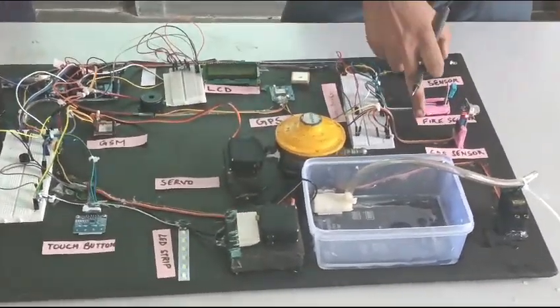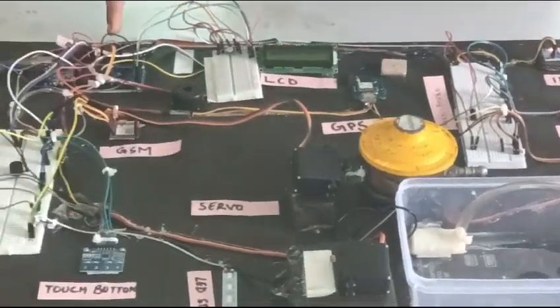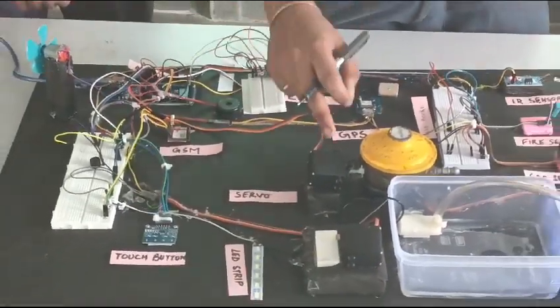When gas leakage occurs, it will send messages to the Arduino. The Arduino will trigger the servo and turn off the regulator valve.